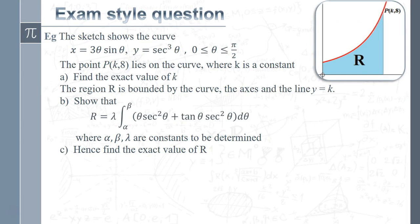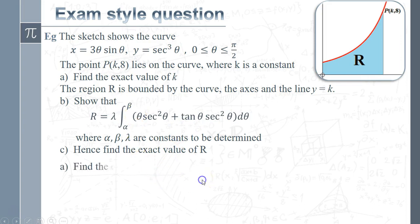This final example is an exam-style question with a whole lot more going on in it. We've got a curve defined parametrically: x = 3θ sinθ, y = sec³θ, with θ between 0 and π/2. We need to find the exact value of k for point P, then show the integral leads to a given result, and finally evaluate it. In the exam it's split into parts so that even if you don't manage part (b) you can still pick up marks in part (c).